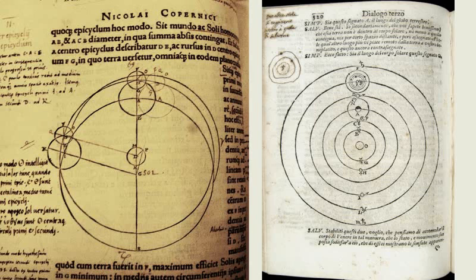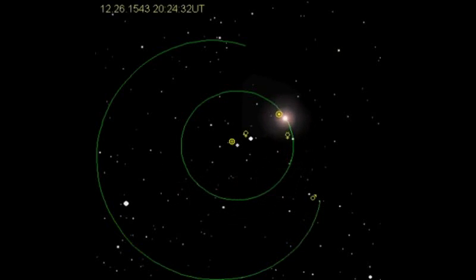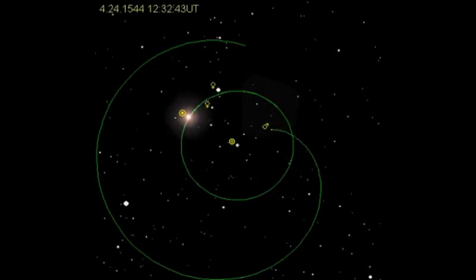The prevailing model in the Middle Ages was the geocentric model, with the spherical Earth at the center of everything, and the sun, moon, and stars revolving around us.